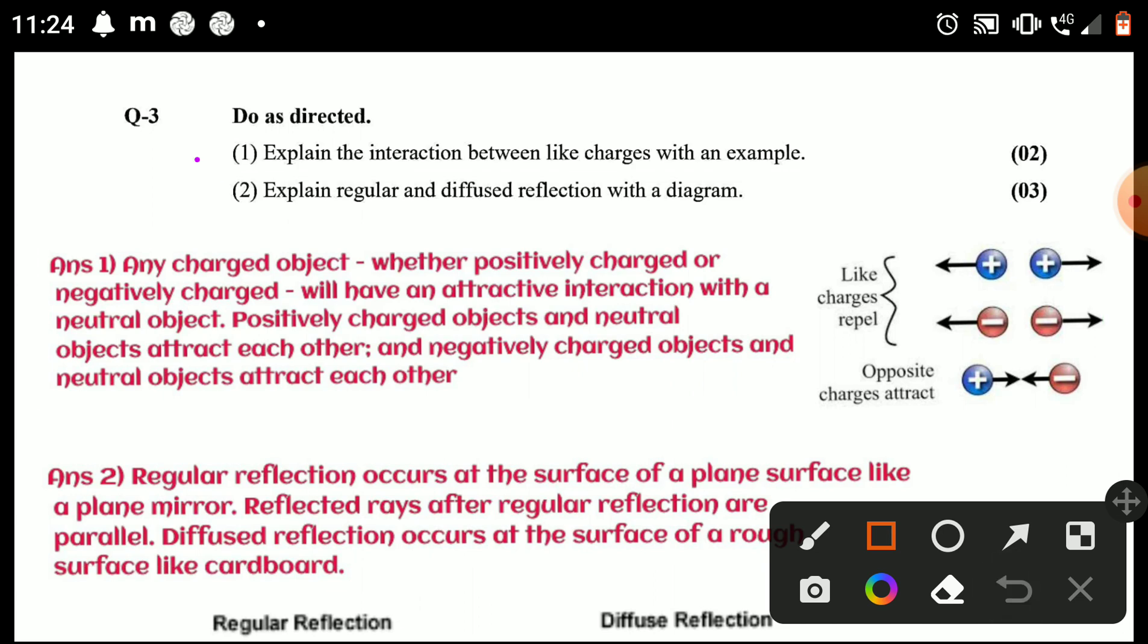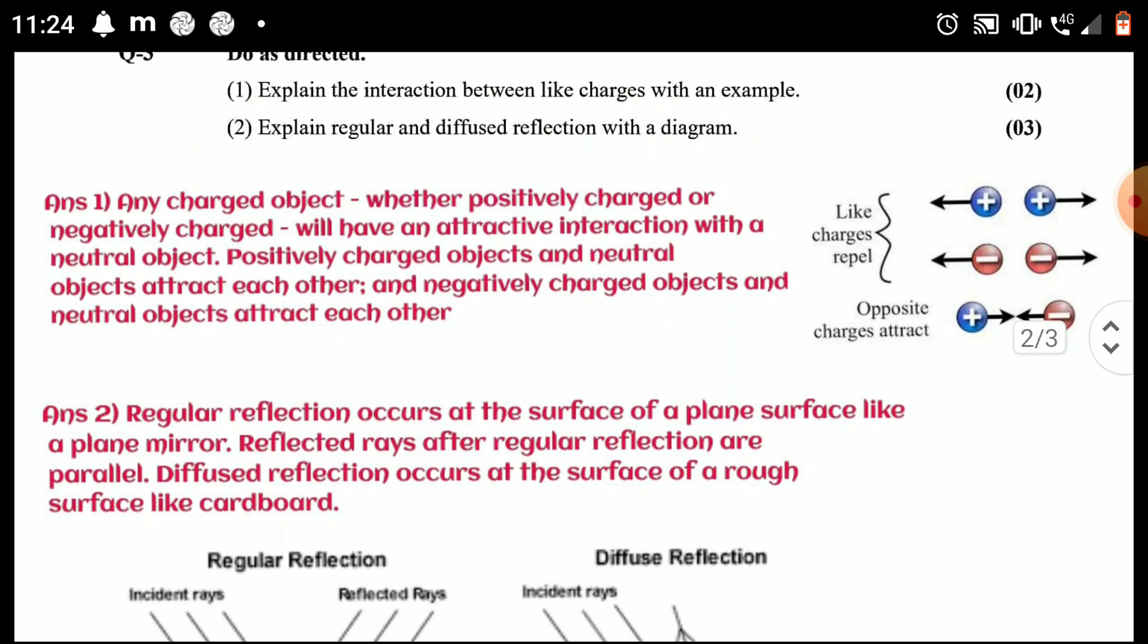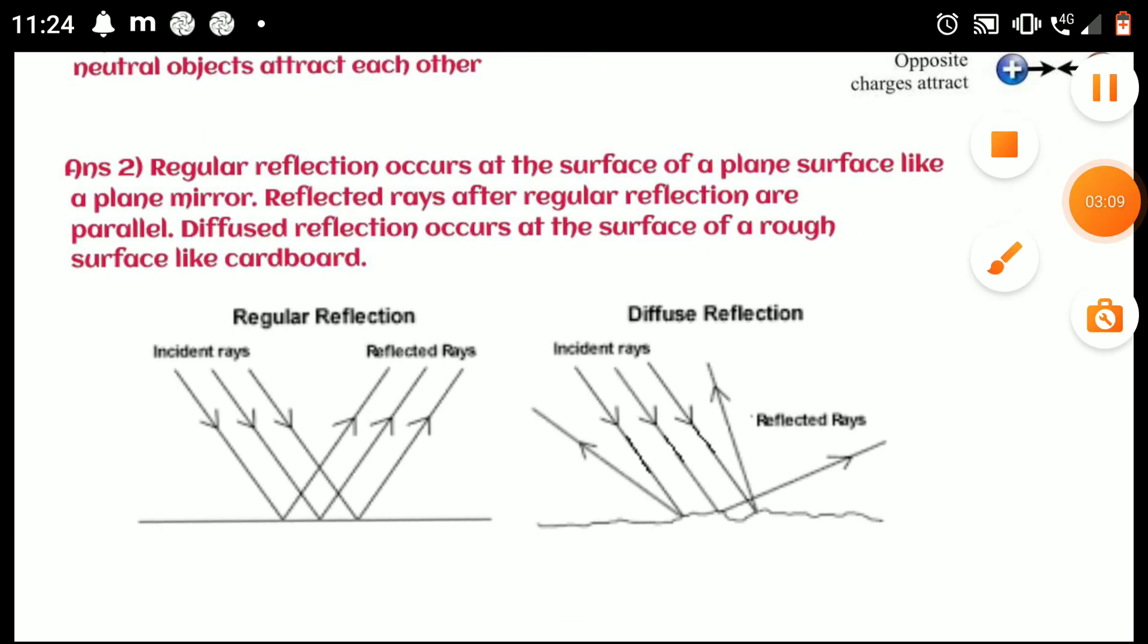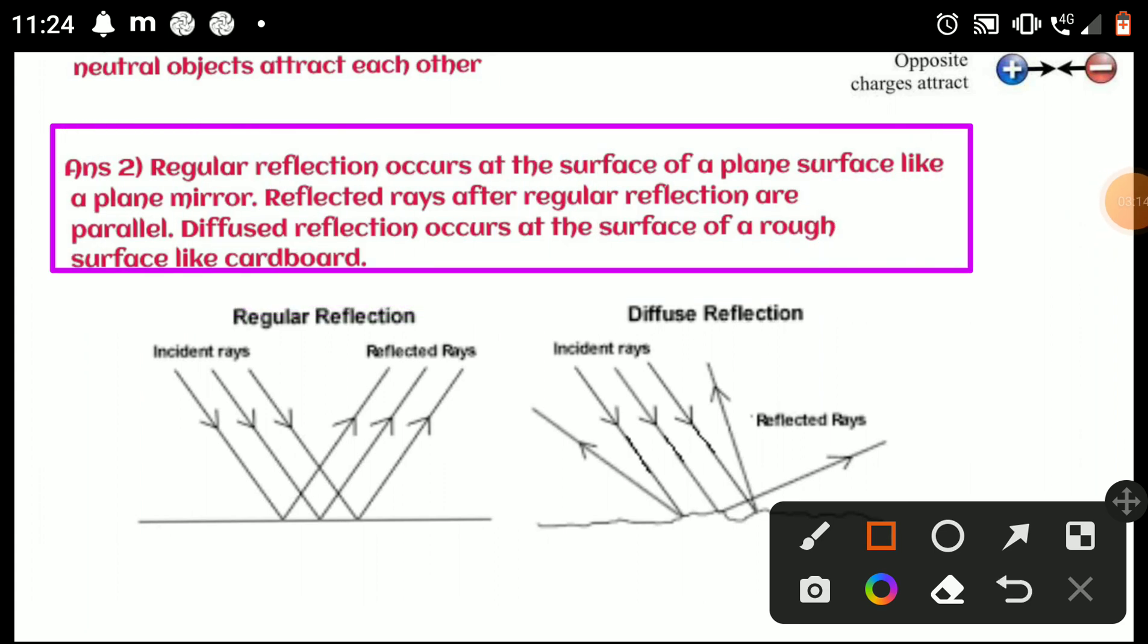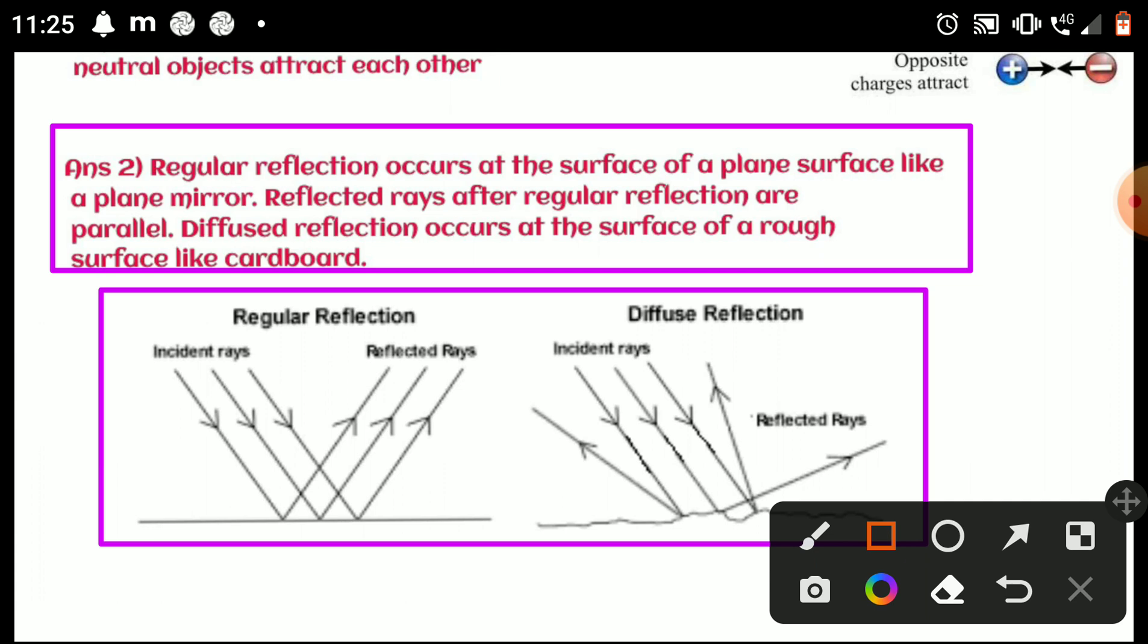Explain regular and diffused reflection with a diagram. Regular reflection occurs at the surface of a plane surface like a plane mirror. Reflected rays after regular reflection are parallel. Diffused reflection occurs at the surface of a rough surface like cardboard. You can see regular reflection and diffused reflection here.